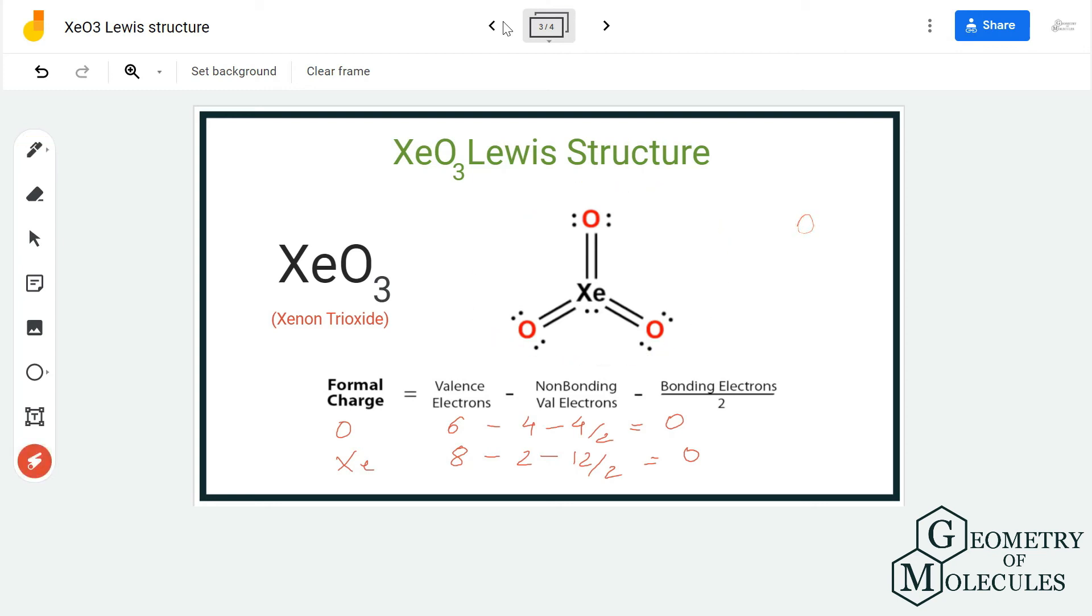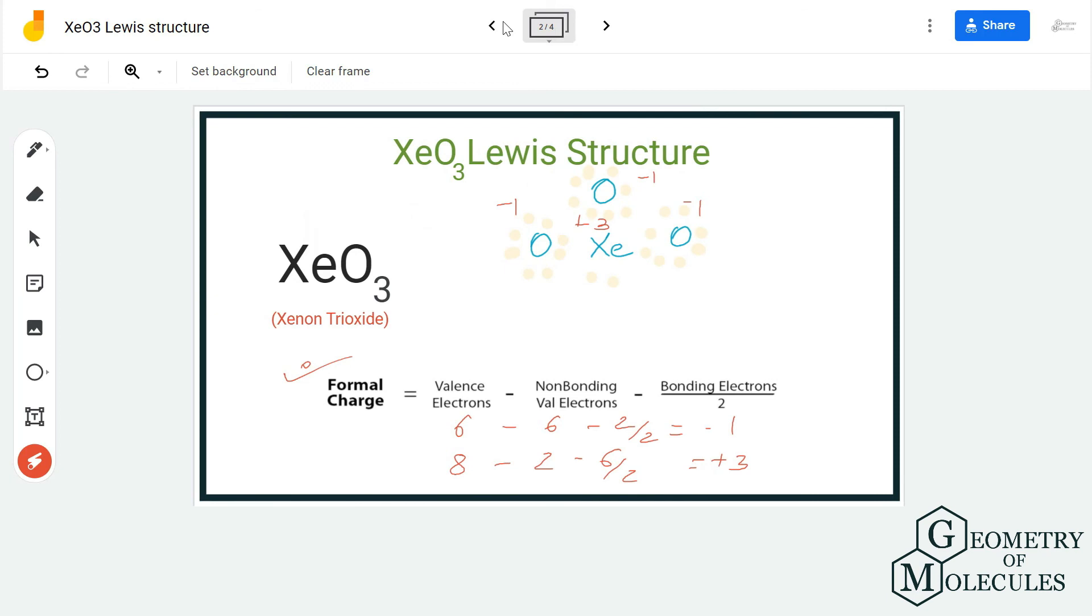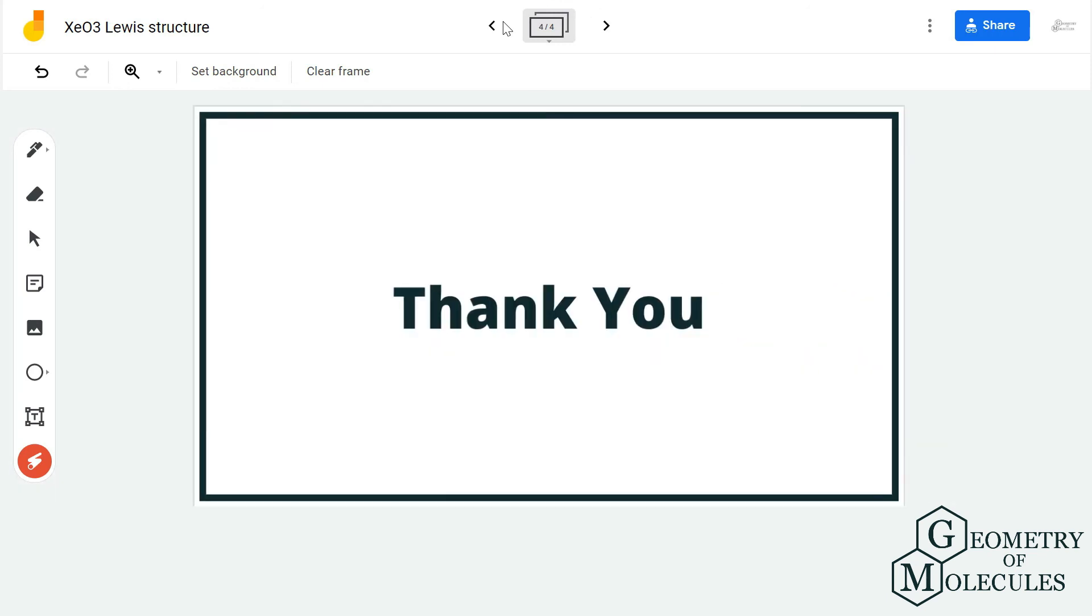and hence this is the Lewis structure for xenon trioxide. Remember to check the formal charges for all atoms when you are not confident about the structure, because at first it might seem that the Lewis structure we had come up with earlier might be the correct one, but calculating the formal charges, we got to know that due to the formal charges present in the previous structure, it was not relevant. So always make sure to calculate the formal charges when you are in doubt. And for more such videos on Lewis structures, molecular geometry, and polarity of molecules, make sure to subscribe to our channel, and thank you for watching.